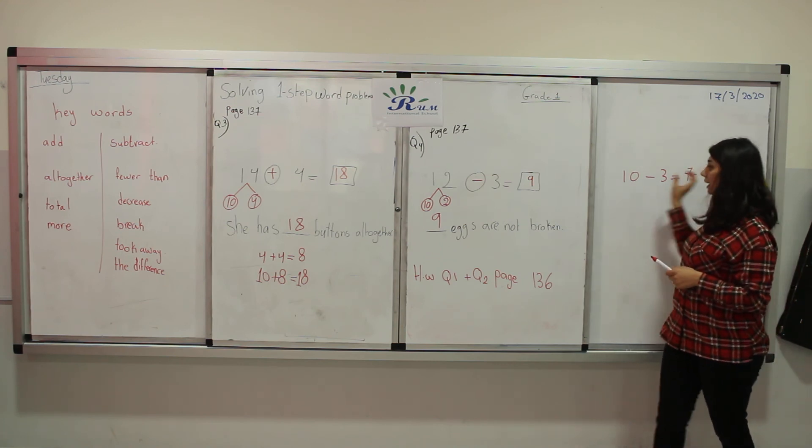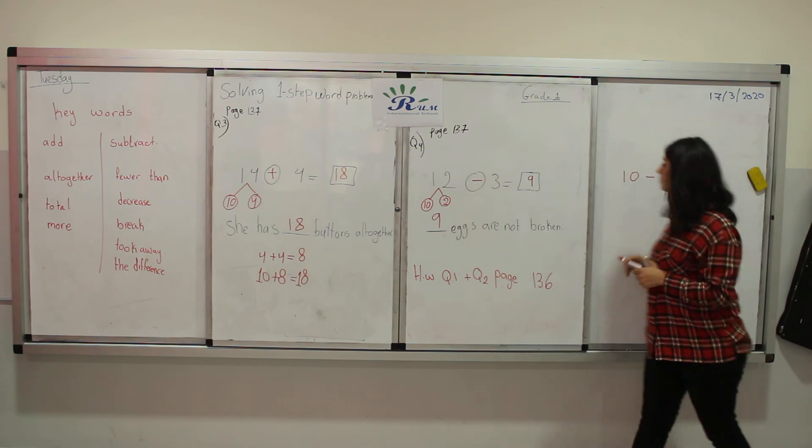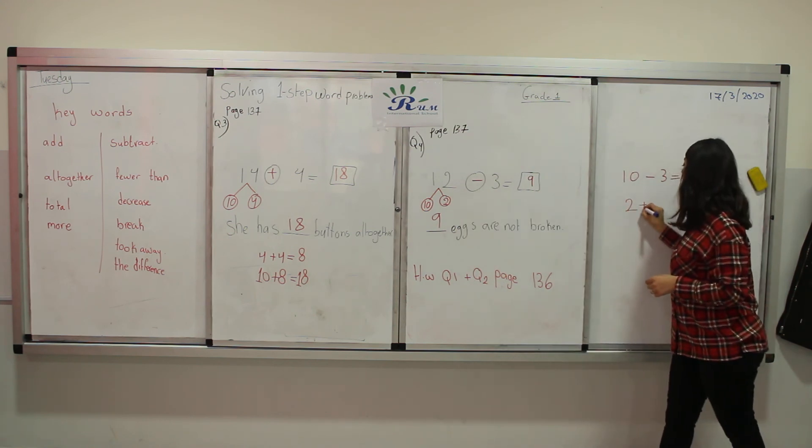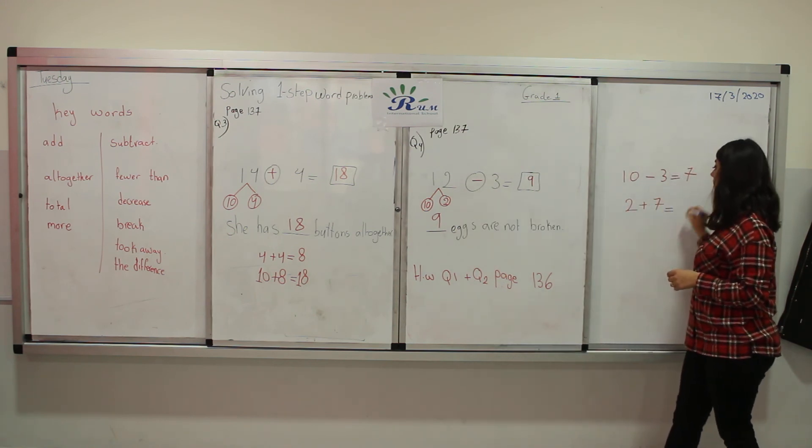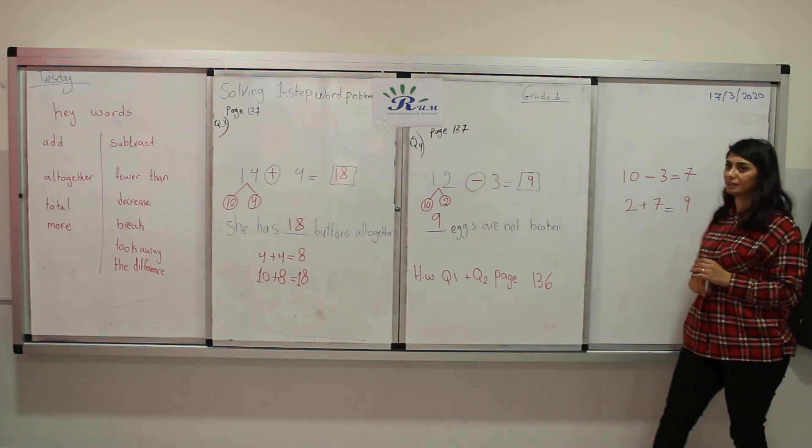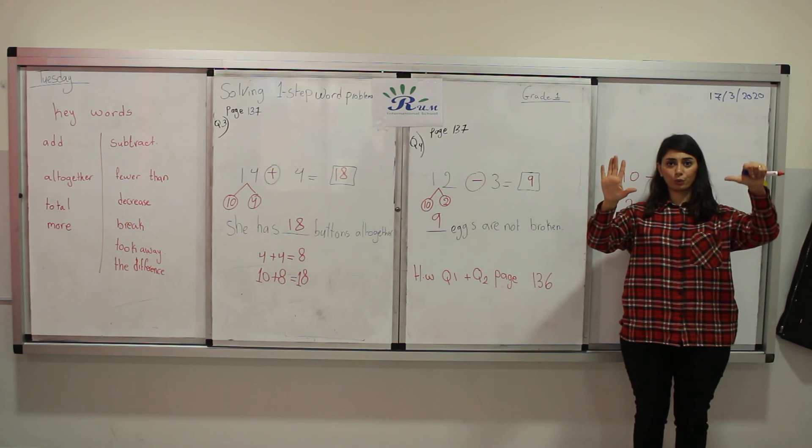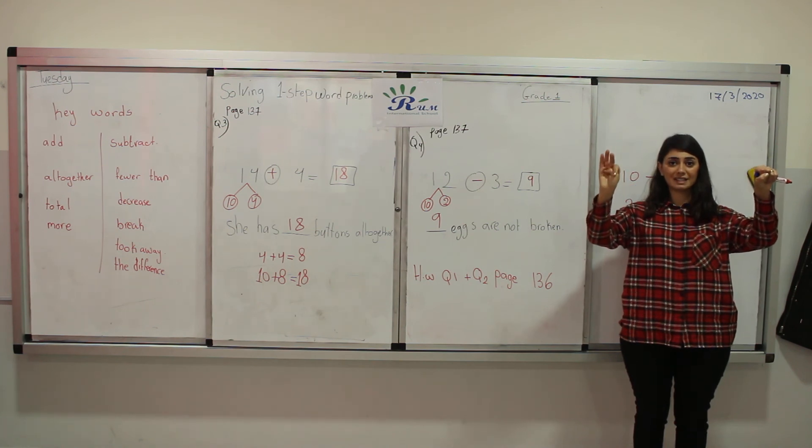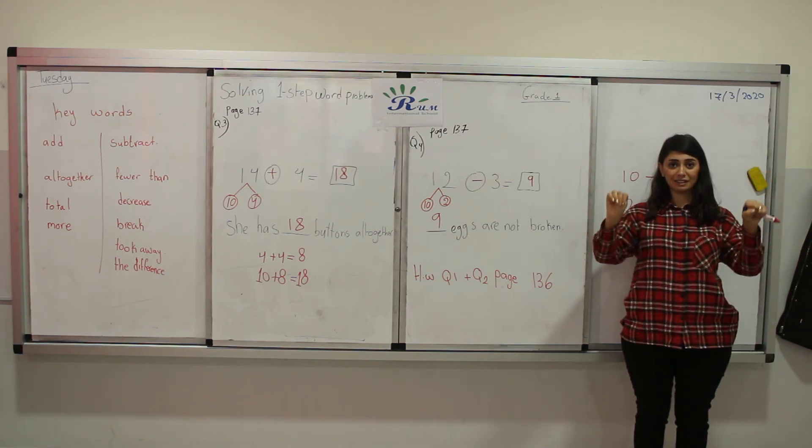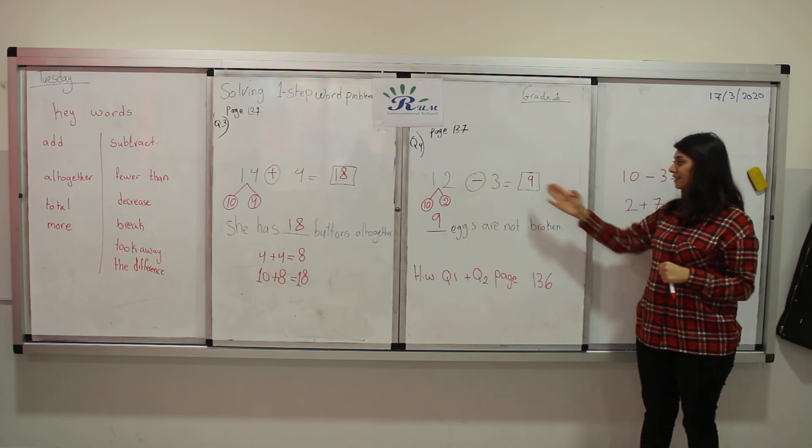And then we add it just to the ones. 2 plus 7 is equals to 9. 2 in our head, 7 on our fingers. 2, 3, 4, 5, 6, 7, 8, 9. It's the same answer.